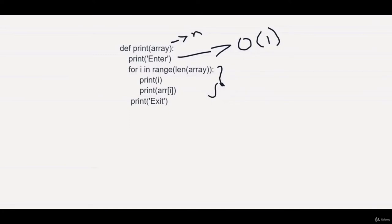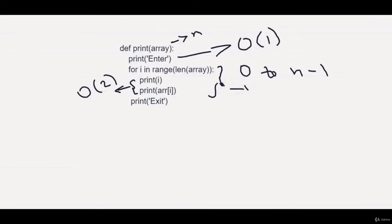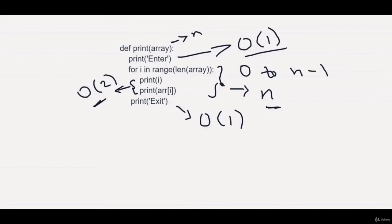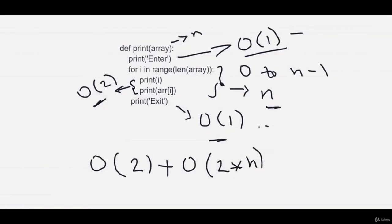The for loop runs from 0 to the length of the array, 0 to n minus 1. Here it will be printing two things which are O(1) each and combine to become O(2). Since it's printing every n times, this whole for loop will run n times. The last statement will also take O(1). To calculate the whole complexity: O(1) plus O(n) times 2, plus the last O(1), giving us O(2 + 2n).